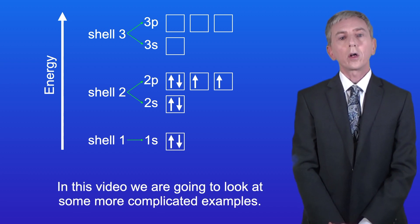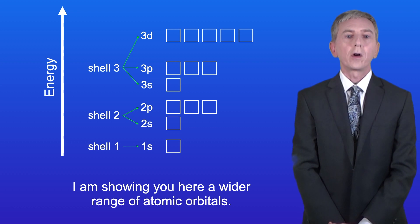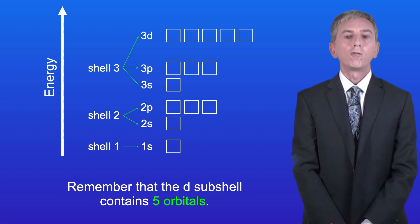Now in this video we're going to look at some more complicated examples. I'm showing you here a wider range of atomic orbitals. As you can see I'm now showing the d-subshell in shell 3. Remember that the d-subshell contains five orbitals.